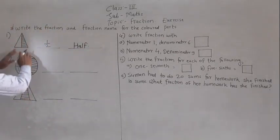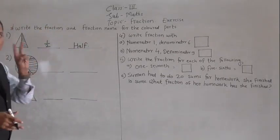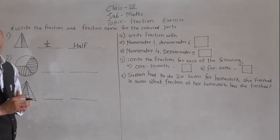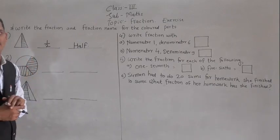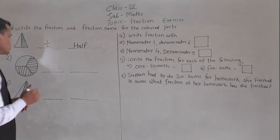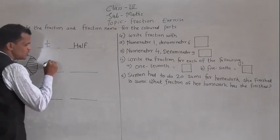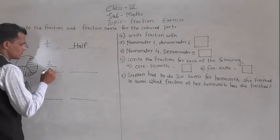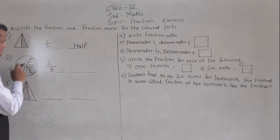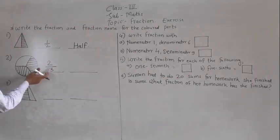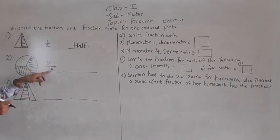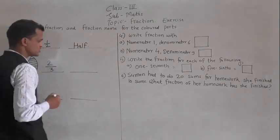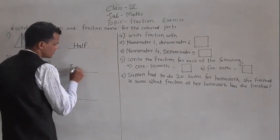Next, here one circle is given and two parts are shaded or colored. There are three total parts and two parts are shaded or colored. So write the fraction for that portion: two out of three. There are three total parts and out of three, two parts are colored. So two by three means two third. Write the fraction name: two third.